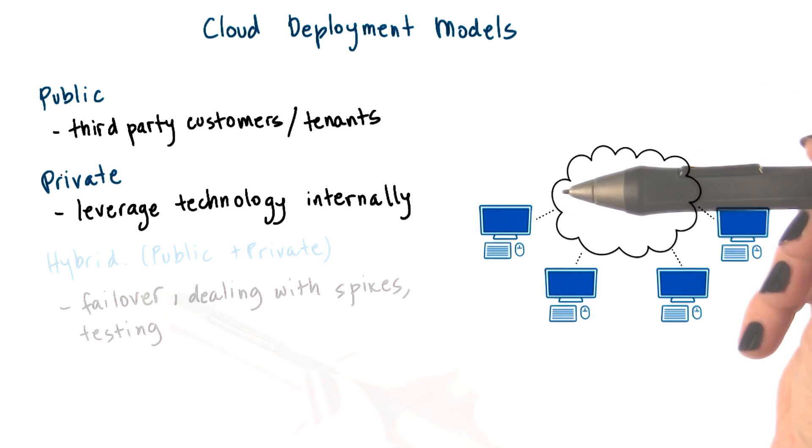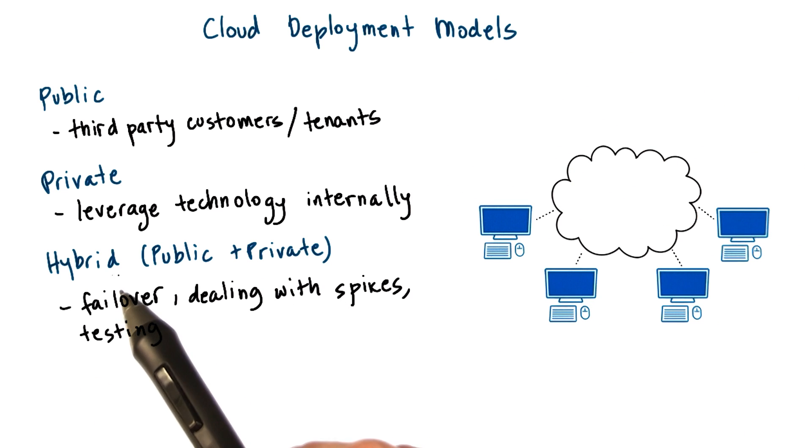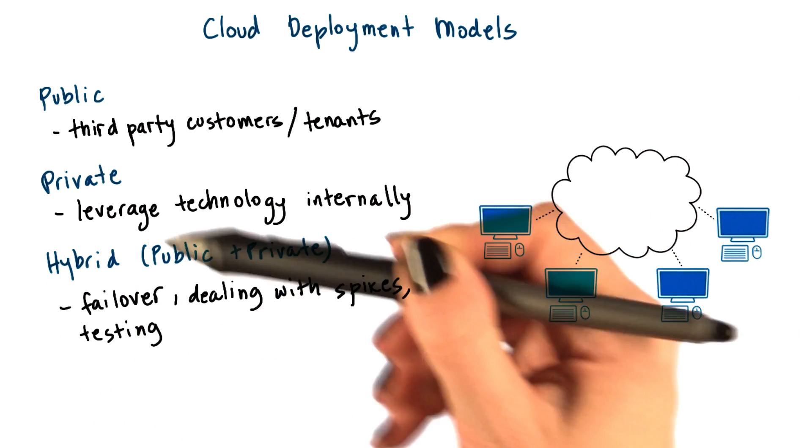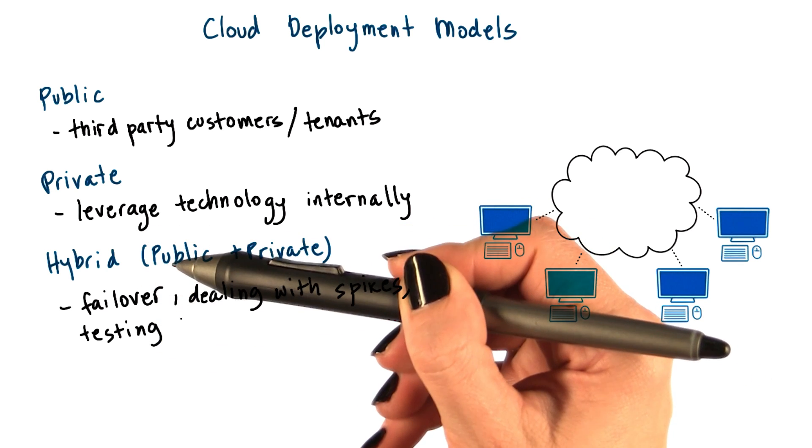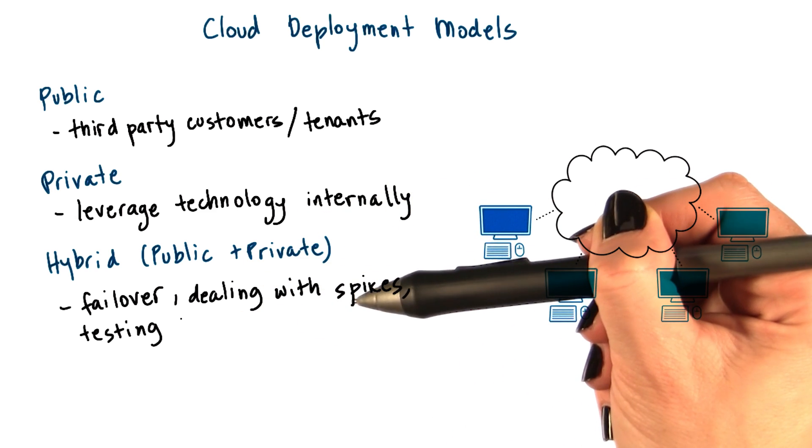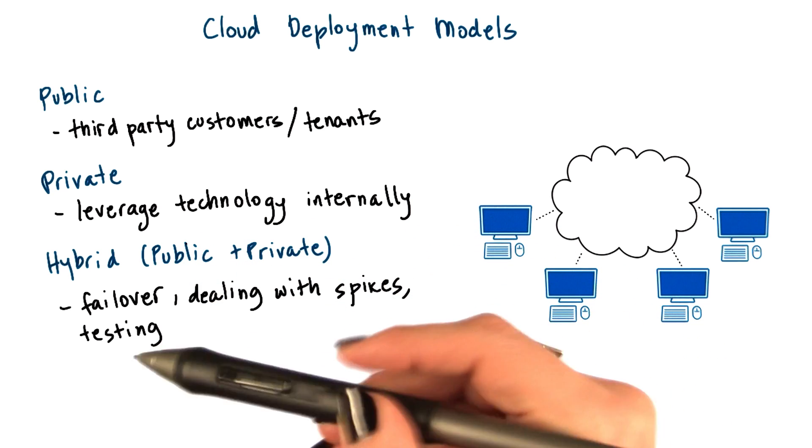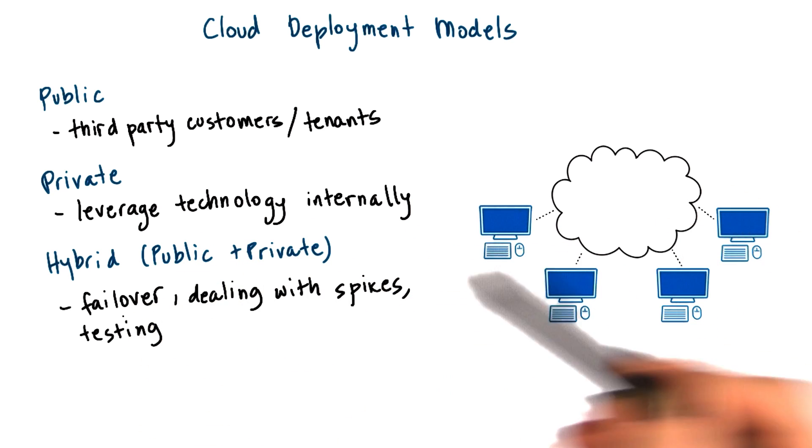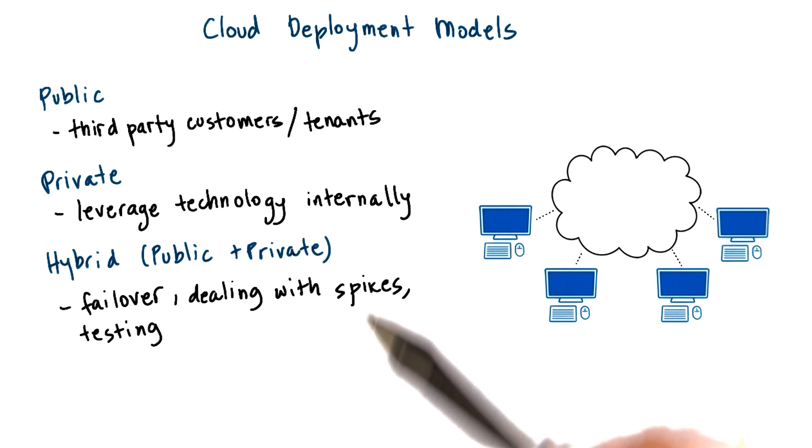Then there is a hybrid cloud as a possible deployment model. This is a scenario where a private cloud is interfaced with some public cloud where these public resources are used either for failover, for some additional redundancy, for dealing with spikes, or for running simulated workloads that would then generate supposed request patterns on top of their privately run core services.